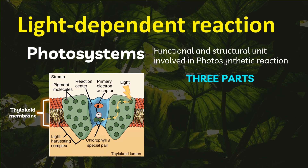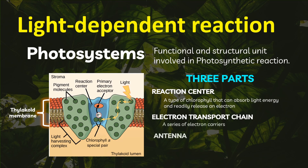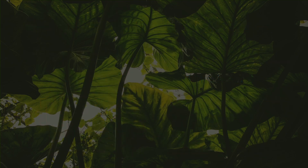There are three parts of photosystems. The reaction center, which is a type of chlorophyll that can absorb light energy and readily release electrons. The electron transport chain, a series of electron carriers. And the antenna, which is composed of chlorophyll pigments that gather and absorb light until it reaches the reaction center.